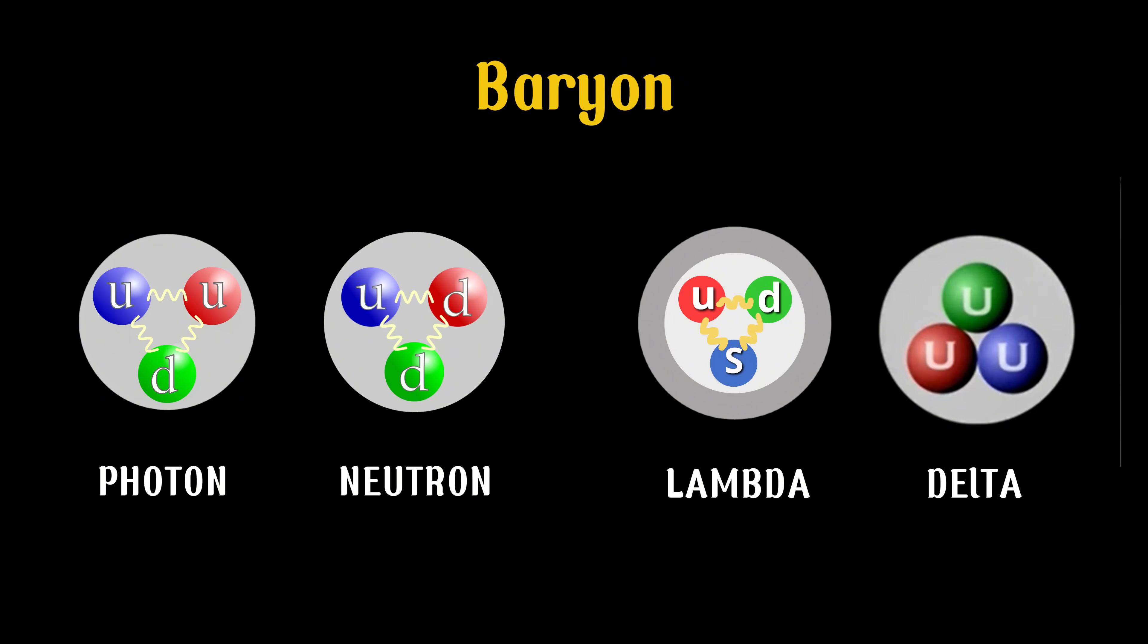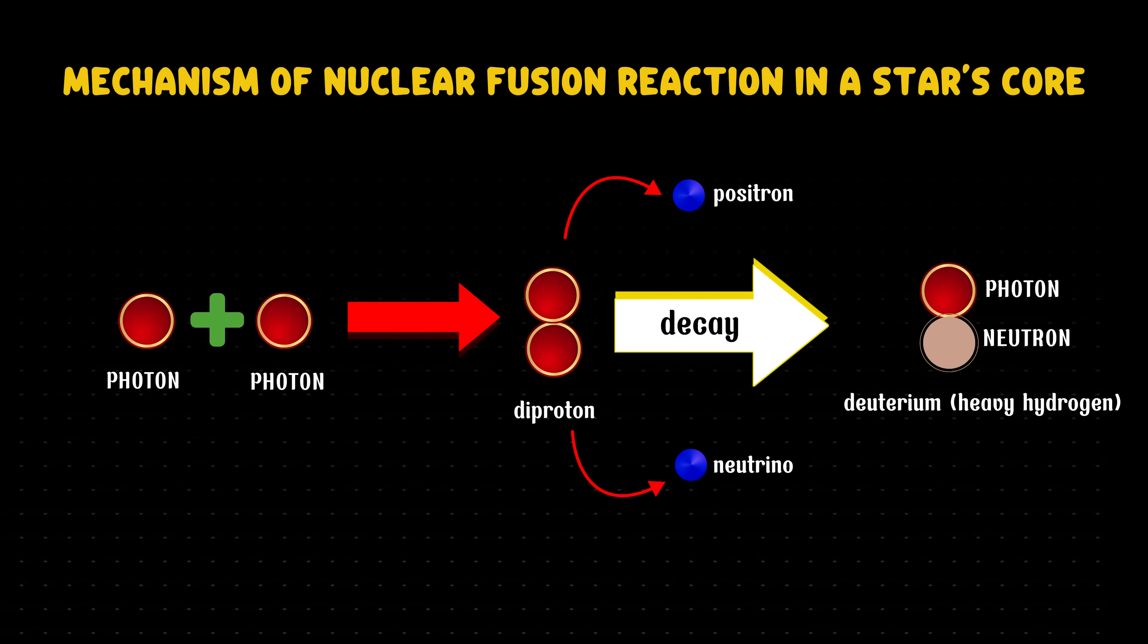Other baryons, like the lambda, made of one up quark, one down quark, and one strange quark, or the delta, made of three up quarks, are far less stable than protons and neutrons. In short, baryons are particles formed from three quarks or antiquarks. During any physical interaction, including decay or fusion, the number of baryons remains conserved.